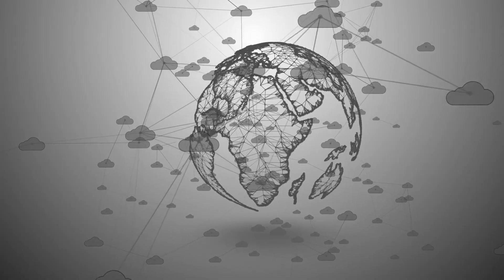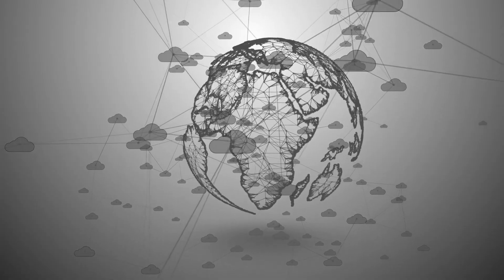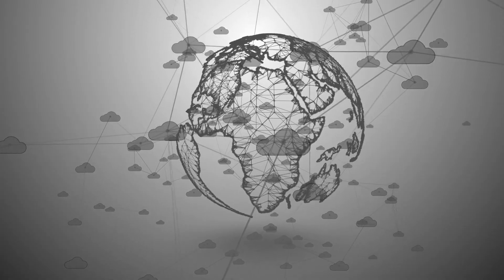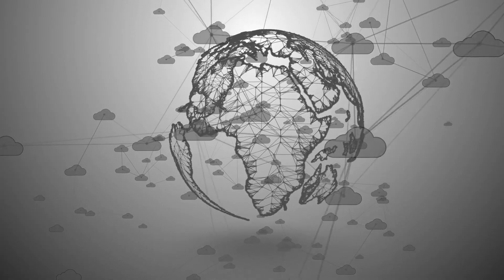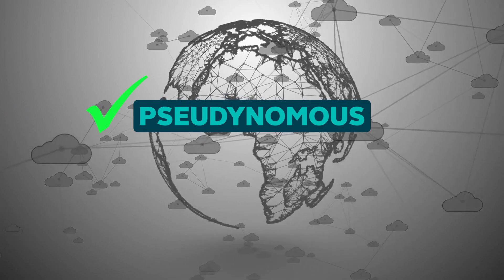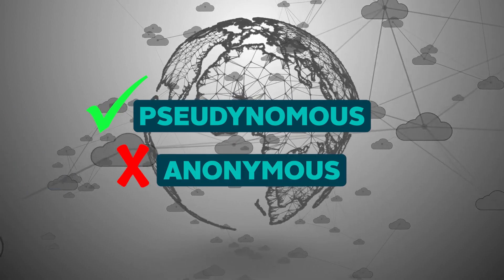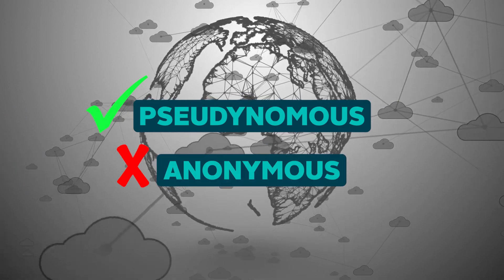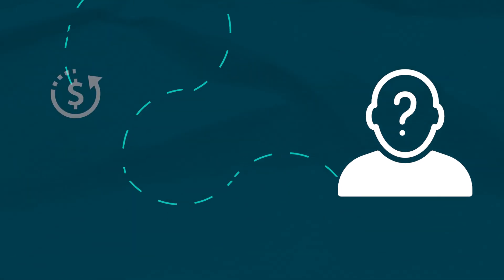Now, someone might ask, is there really a need for a privacy protocol when users' identities are hidden on the blockchain? While it's true that the blockchain is pseudonymous, it is not at all anonymous. Simply put, when your identity is hidden, the trace of your transactions is not.